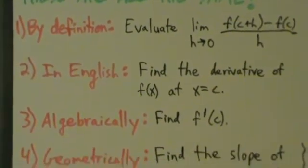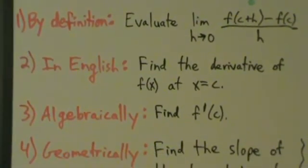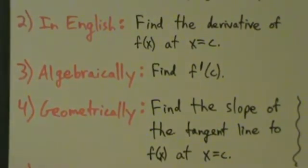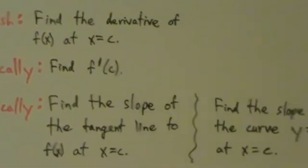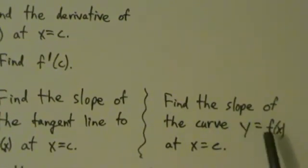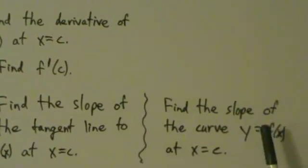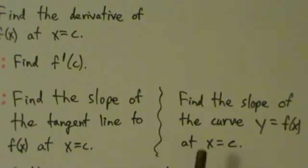The fourth way is geometrically or graphically: find the slope of the tangent line to f(x) at x equals c. Remember in the last video we briefly talked about how the slope of the tangent line is the same thing as the derivative. You could also say the slope of the curve, so find the slope of the curve y equals f(x) at x equals c. Slope of the tangent line at x equals c or slope of the curve at x equals c - they mean exactly the same thing. If you're asked to find a derivative in terms of slope, you might be asked either one of these questions.